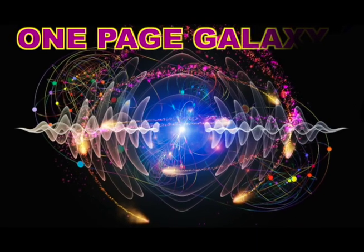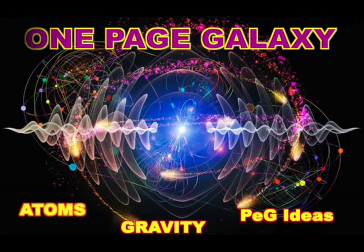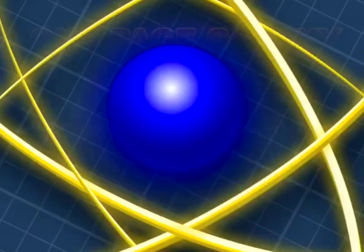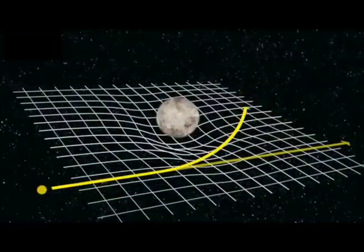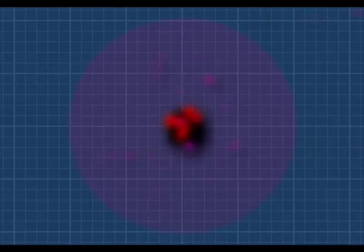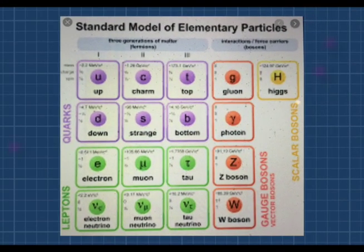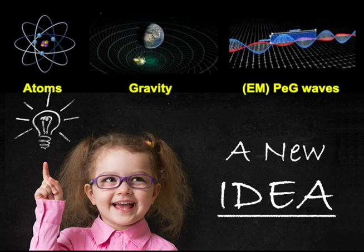Welcome to OnePageGalaxy with Atoms, Gravity, and Peg Ideas. What if our current theories about atoms and gravity are wrong? Today, gravity is defined by these guesses. What does spent space-time have to do with gravity? Atoms are defined by complex quantum guesses. What if this theory is crap? This video is about new aha ideas for these.